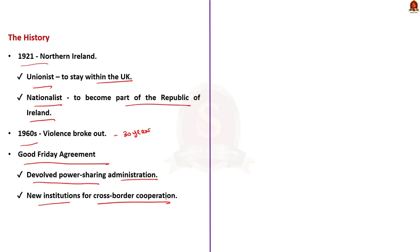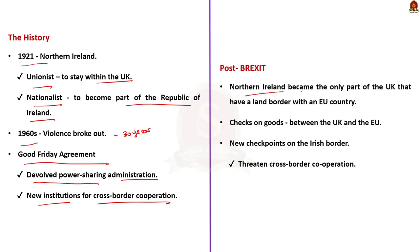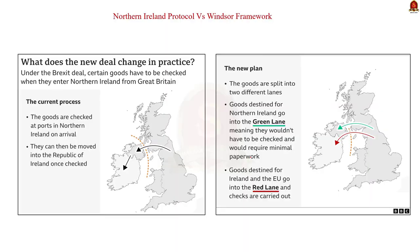Before Brexit, trade between Northern Ireland and the Republic of Ireland was easy because both were in the European Union. But after Brexit, Northern Ireland became the only part of the UK with a land border with an EU country — the Republic of Ireland. Checks are required on goods transported between the UK and the EU, but this could not happen on the Irish border because of the Good Friday Agreement. So a new deal called the Northern Ireland Protocol was made. Under it, checks are carried out at Northern Ireland's ports, applying to goods travelling from Great Britain — England, Scotland and Wales — to Northern Ireland.